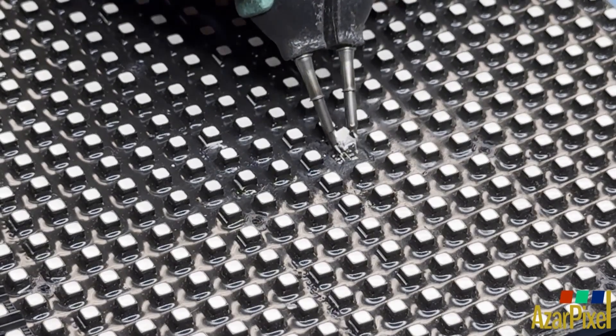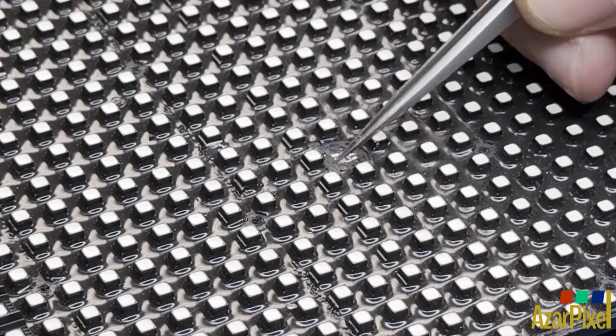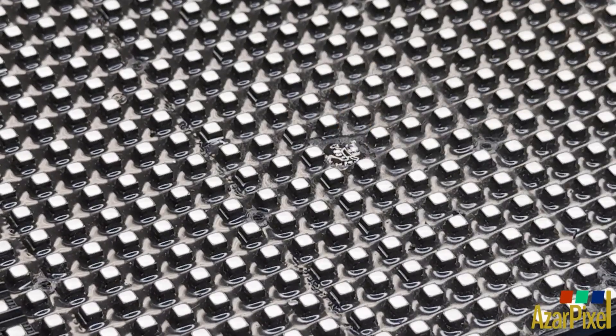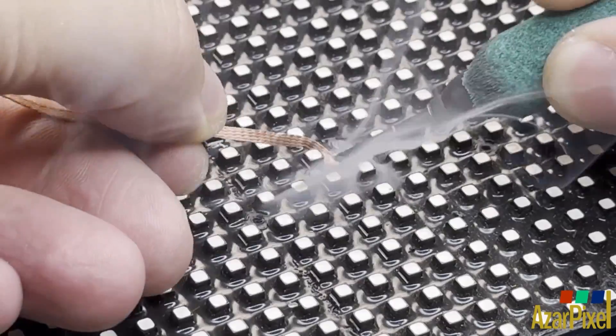Utilizing solder pliers, the LED is detached, followed by pad preparation which involves applying flux and removing excess solder with a soldering braid.